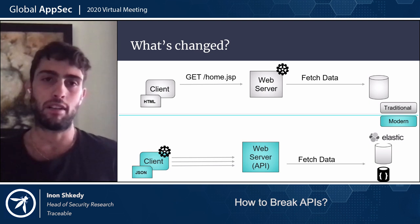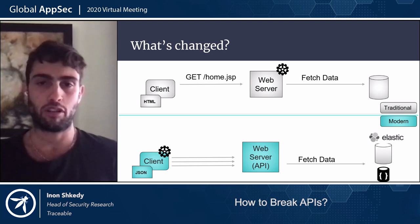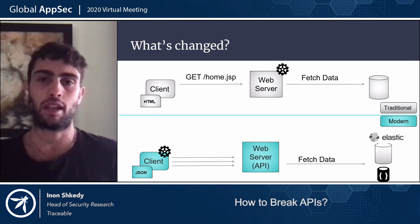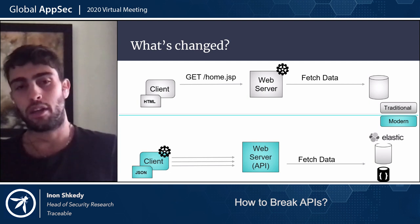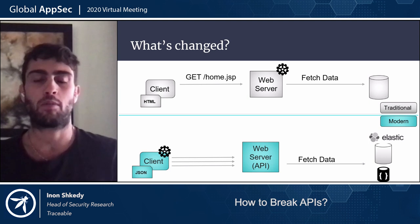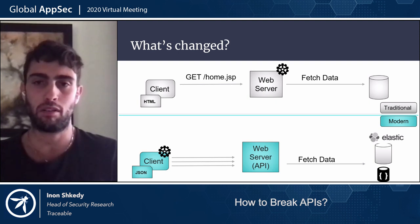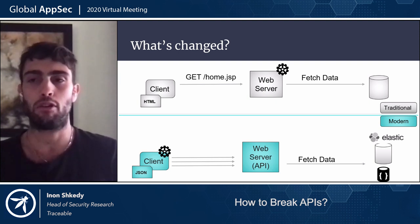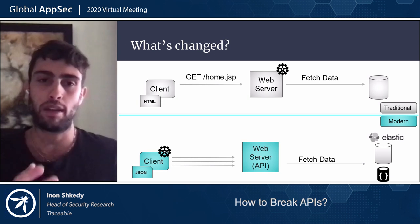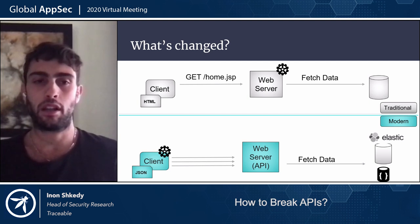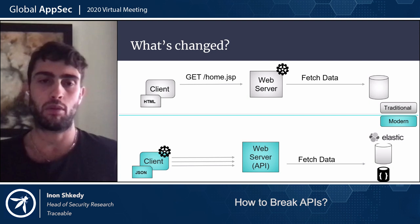I want to talk at a high level about what has changed between traditional applications and modern applications. On the top of the screen, you can see the traffic patterns between the client, web server, and database in traditional applications. In the past, it was pretty simple: the client would send an HTTP call to fetch one specific web page, for example home.jsp. The web server would fetch data from the database to build the visual page, which was sent back to the client — a process called rendering. The rendering component was on the web server, which simply returned an HTML page to the client.